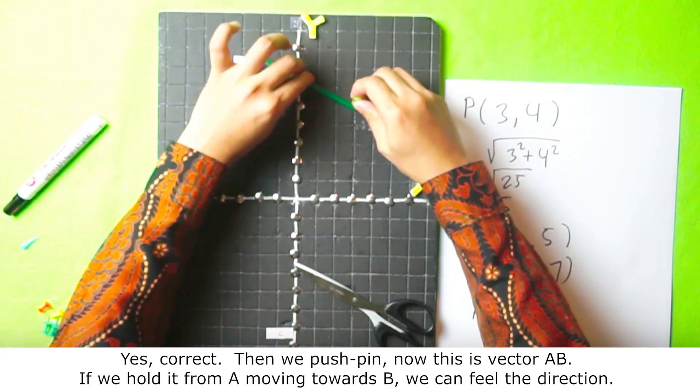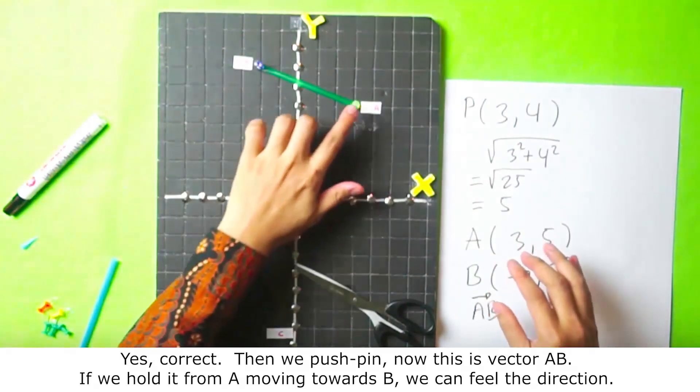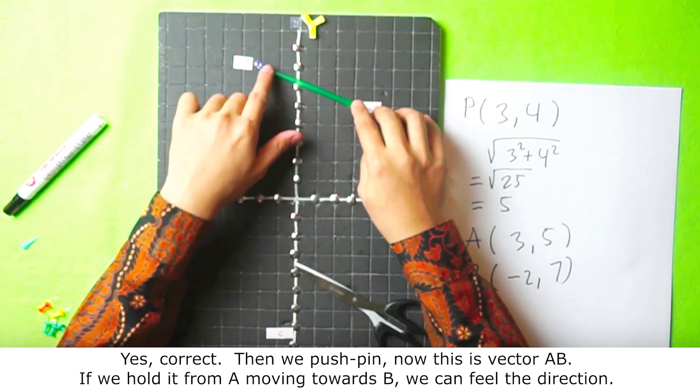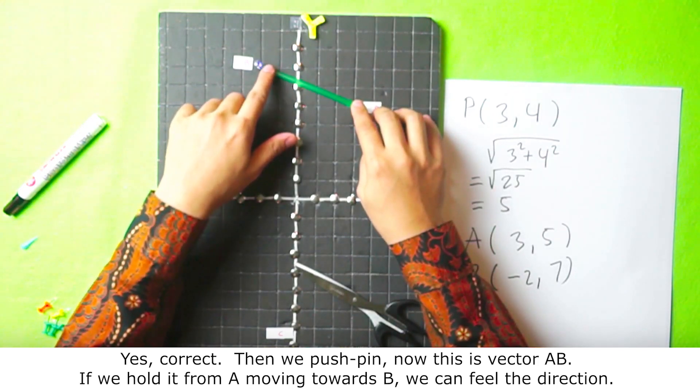Yes, correct. Then we can give pushpins. Now this is vector AB. If we hold it from A moving towards B, we can feel the direction.